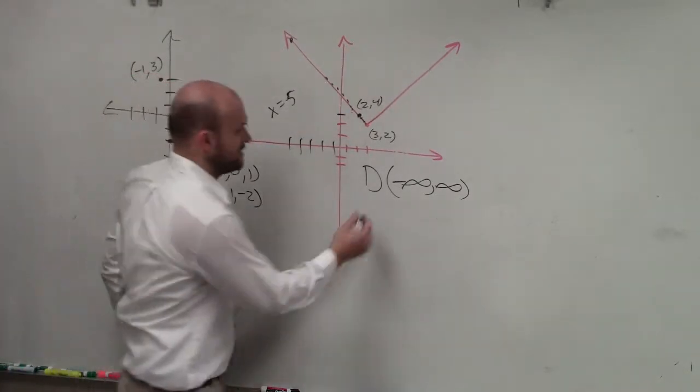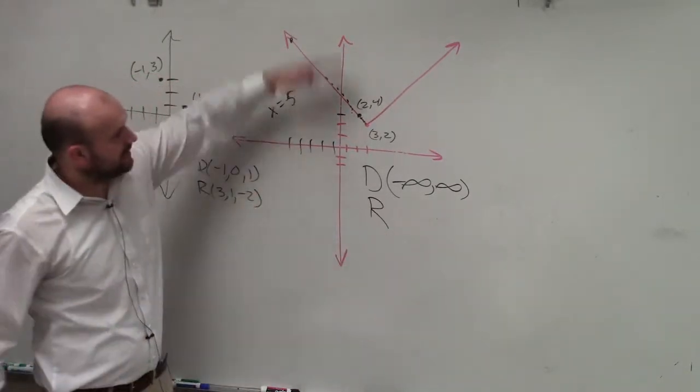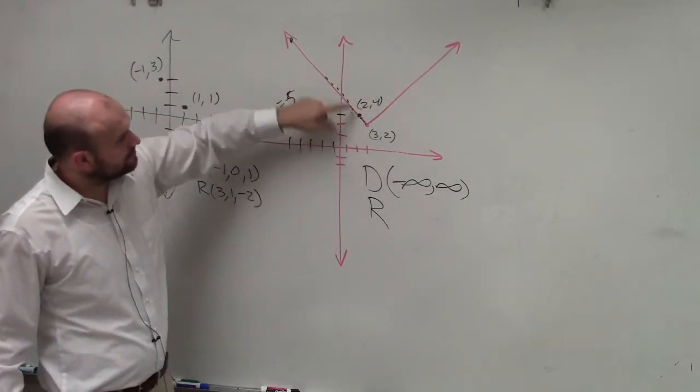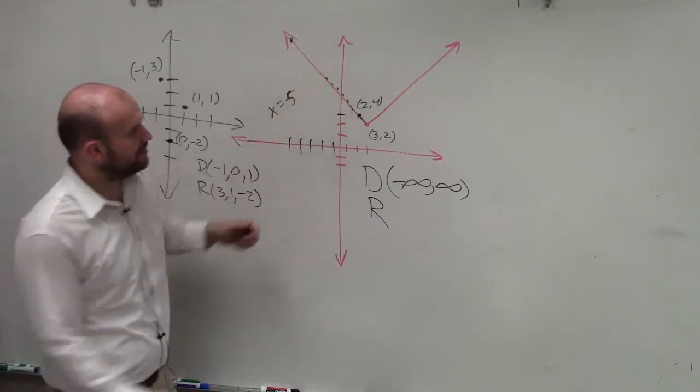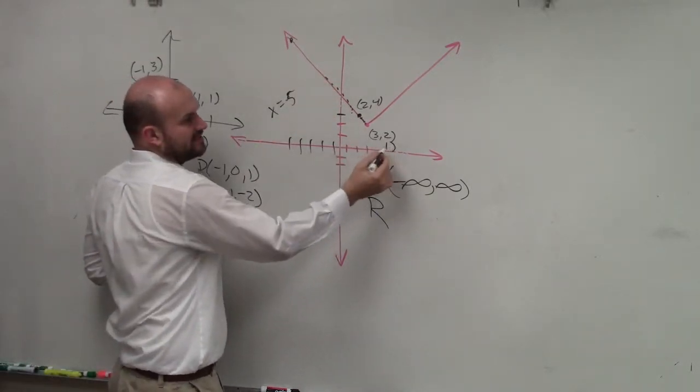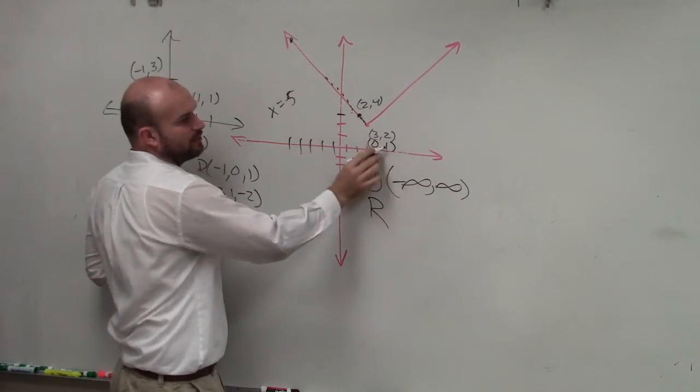However, let's look at the range. Range, now we're not looking at x values, we're looking at the y values. The lowest y value, we know that 2 is a y value, what about 1? Is there an x value when the y value equals 1?